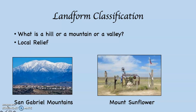The other thing we use is slope. Slope is the angle of inclination of a landform — in other words, how steep the landform is. If you look at the San Gabriel Mountains, they're steep.